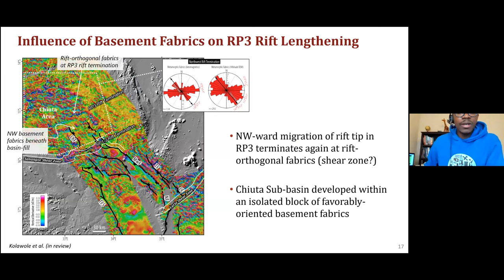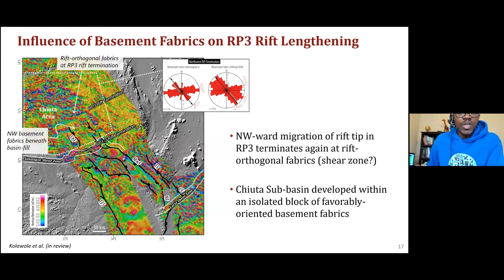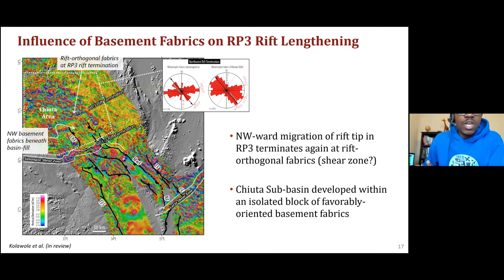In the Chilta area, which represents the lengthening section of the basin, the basement fabrics are rift-parallel. We interpret that they are well-oriented for brittle exploitation in the current stress field, thus facilitating the localization of strain ahead of the earlier termination of the rift. From the aeromagnetic data, we also see basement fabrics changing orientation and trending in a rift-orthogonal direction, representing the present termination of the newest RP3 segment of the rift. This suggests the continuous influence of pre-rift basement fabrics and shear zones on the episodic propagation and migration of the rift tip.